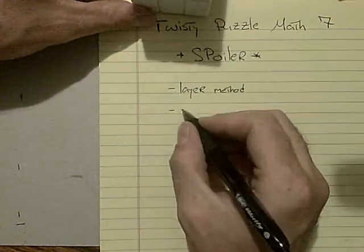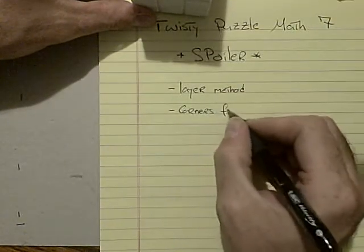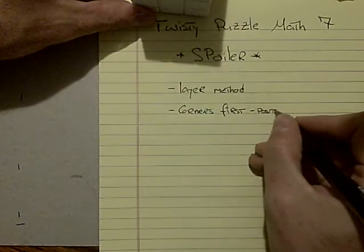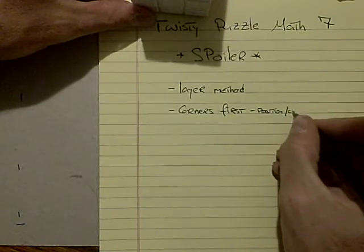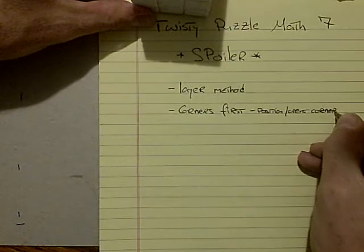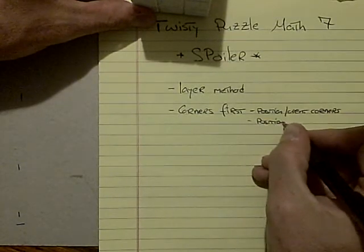There are other ways, though. One is the corners-first method. Position and then orient corners, and then position and orient edges, in that order.